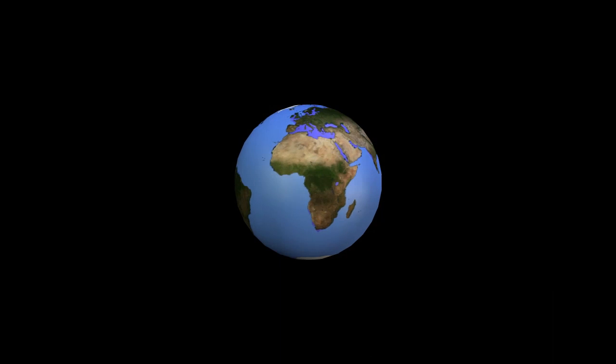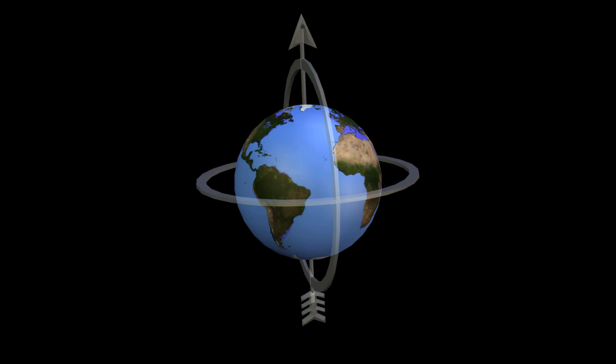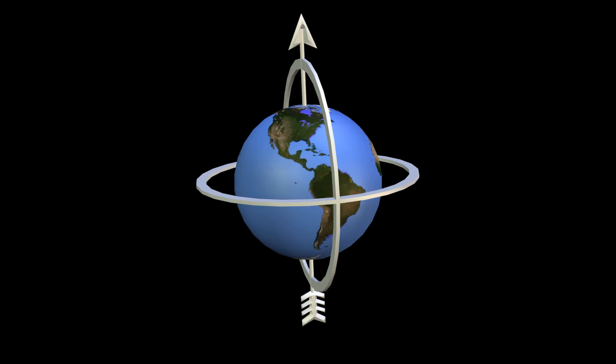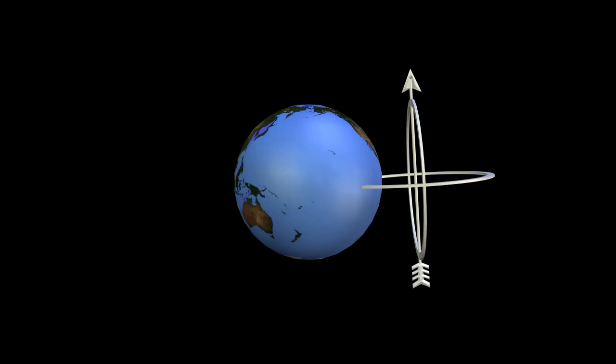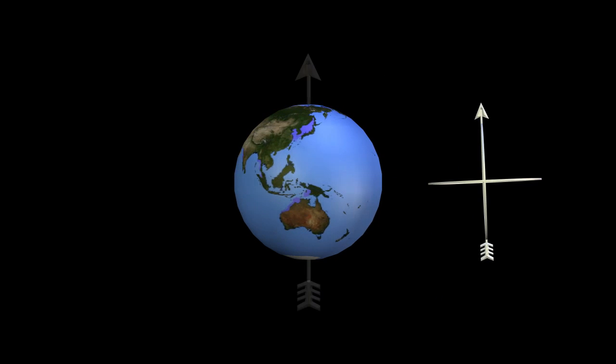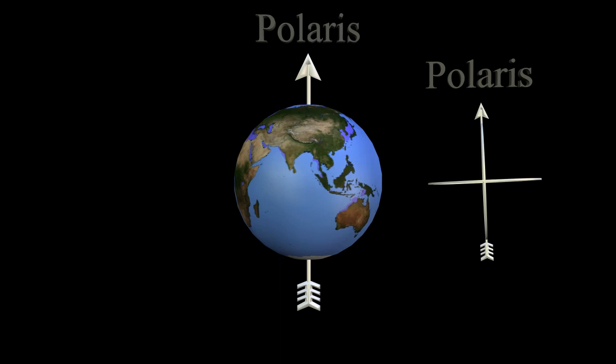The sundial must be oriented correctly. That is accomplished by aligning the axes of the device with the earth's axes. This means the axes of the sundial, its gnomon, is pointed at Polaris, the north star.